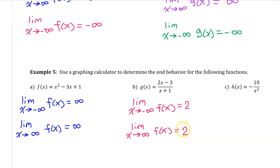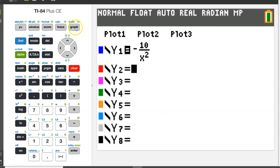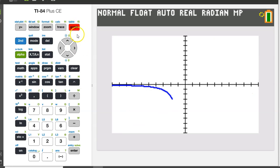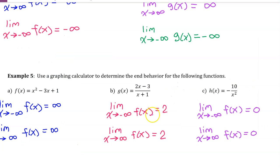One more: type h of x in as y1. On both the left and the right, the function appears to be approaching 0. So the limit as x approaches negative infinity of f of x equals 0, and the limit as x approaches positive infinity of f of x equals 0.